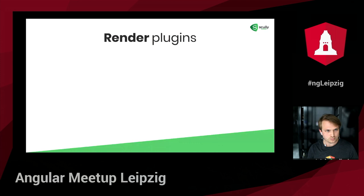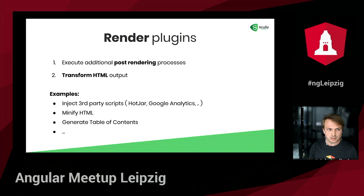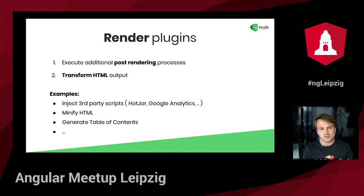The next important plugin type is the render plugin. We can use these plugins to execute additional post-rendering processes — in plain language, this means we can transform the HTML output that comes from pre-rendering our pages. For example, we can inject additional third-party scripts like Hotjar or Google Analytics, minify the HTML to optimize our pages even further, or create extra dynamic content based on the original content — such as a generated table of contents.